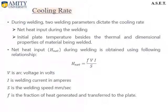The net heat input H_net during welding is obtained using the equation: H_net equals F times V times I divided by S, where V is the voltage, I is the current in amperes, S is the welding speed expressed in millimeters per second, and F is the fraction of heat generated and transferred to the plate.